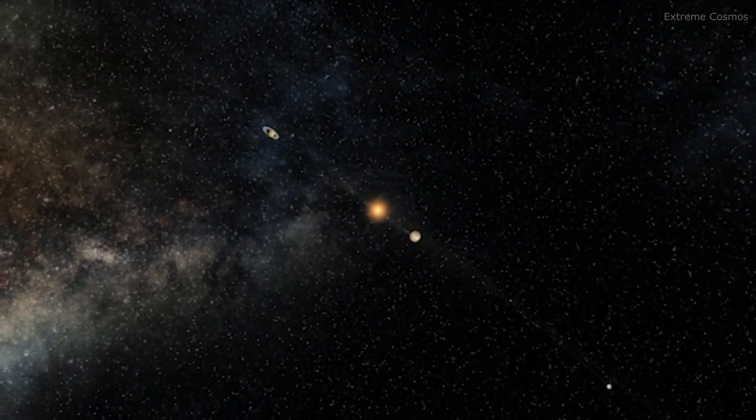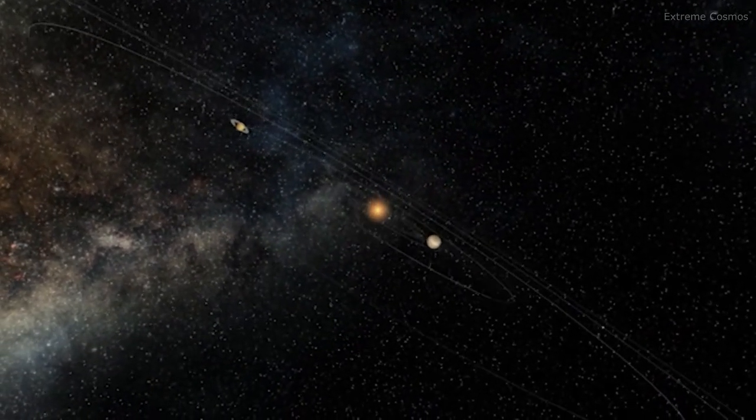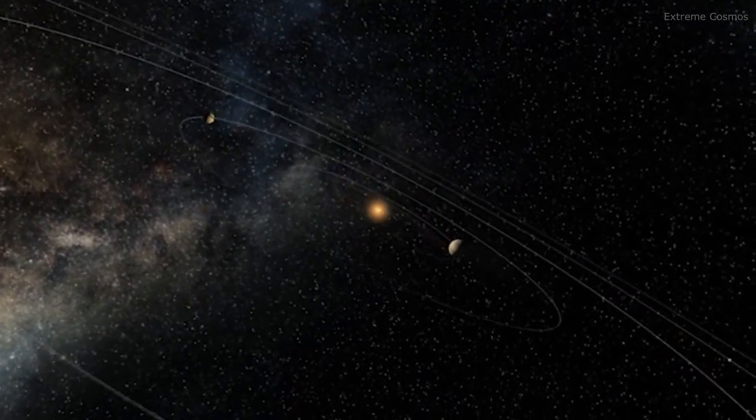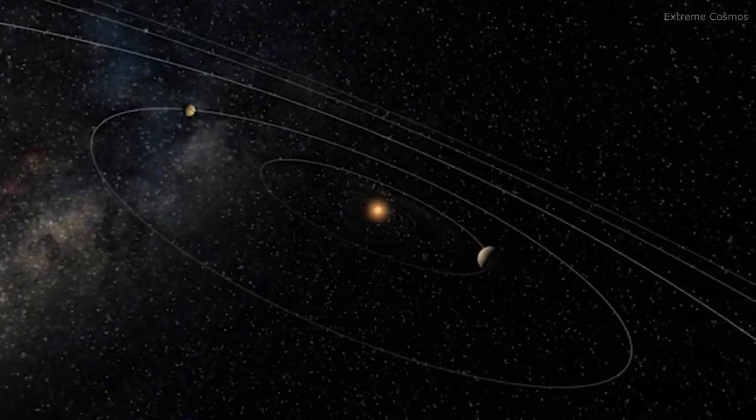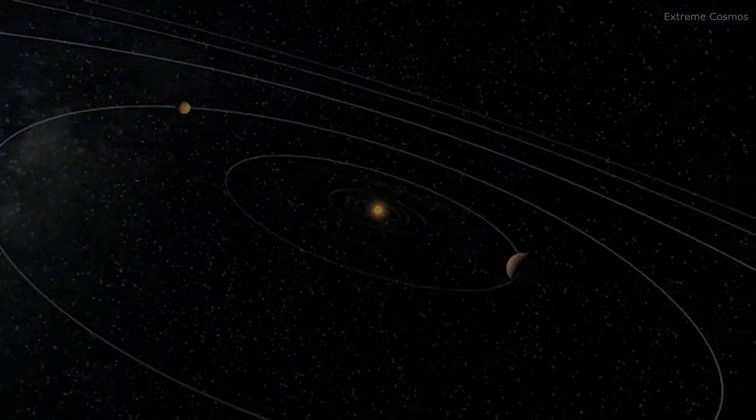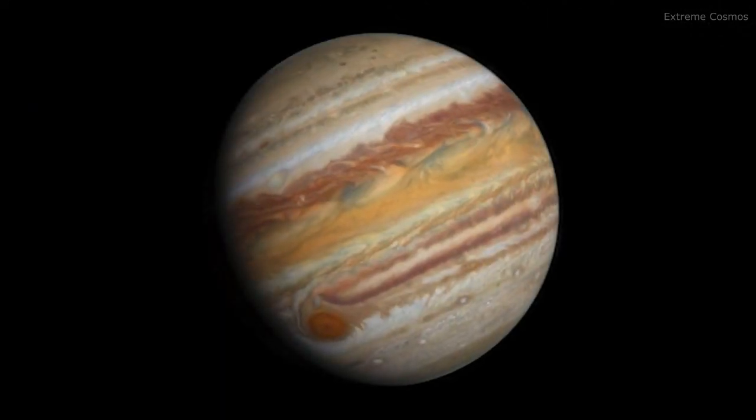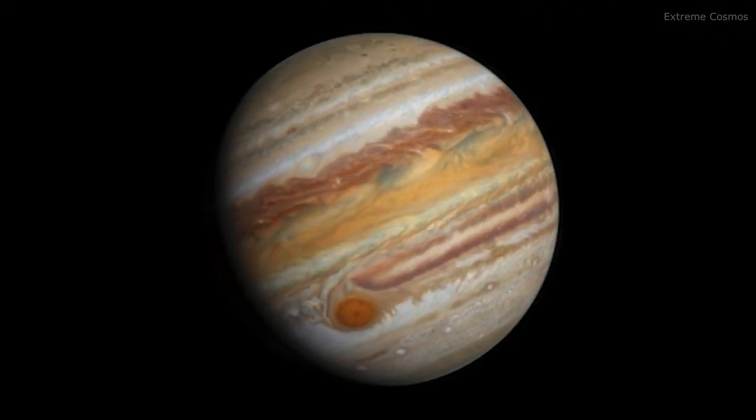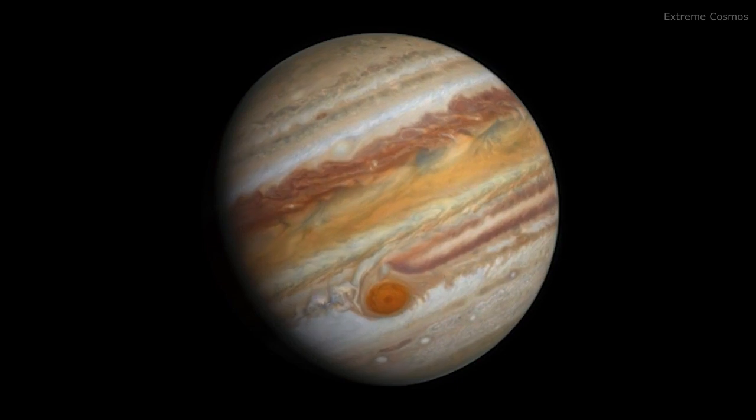Hubble has revolutionized planetary science in a number of ways through its precise observations of our own Solar System. Hubble has charted the dynamic activity on Jupiter and its Moon Io.